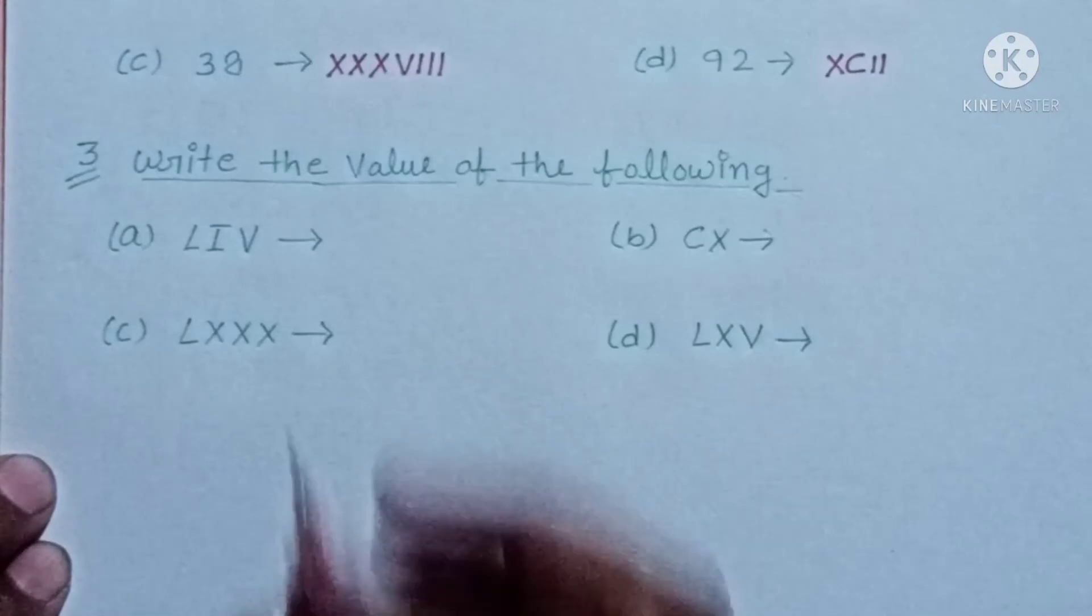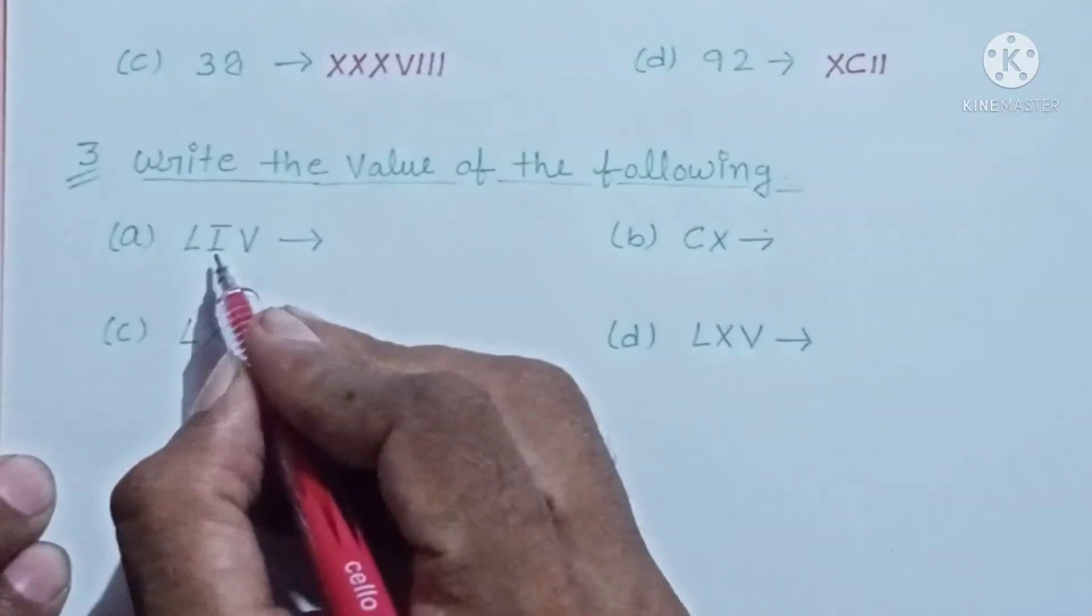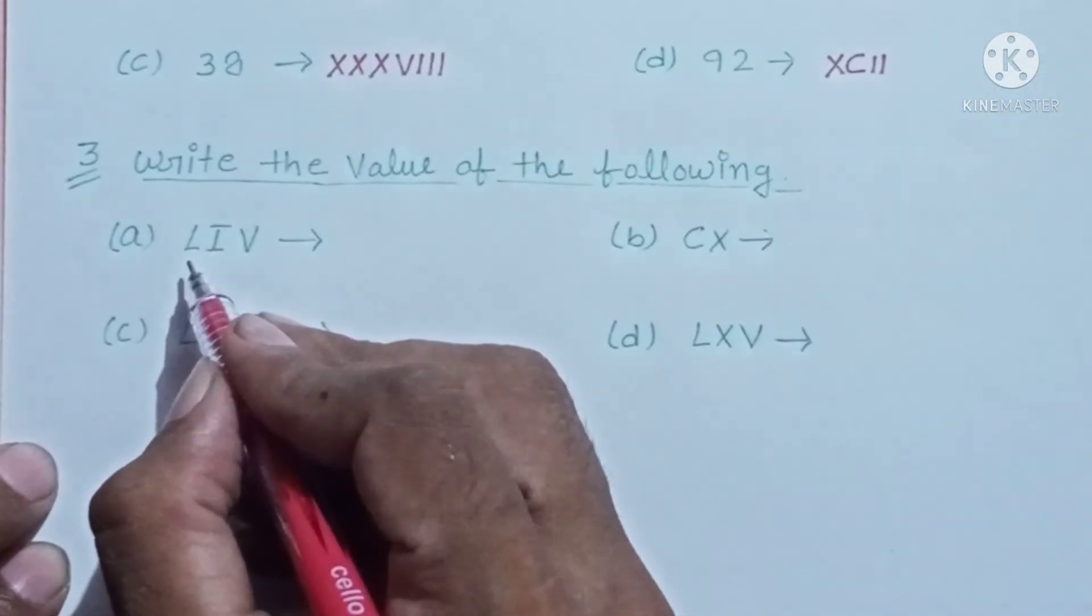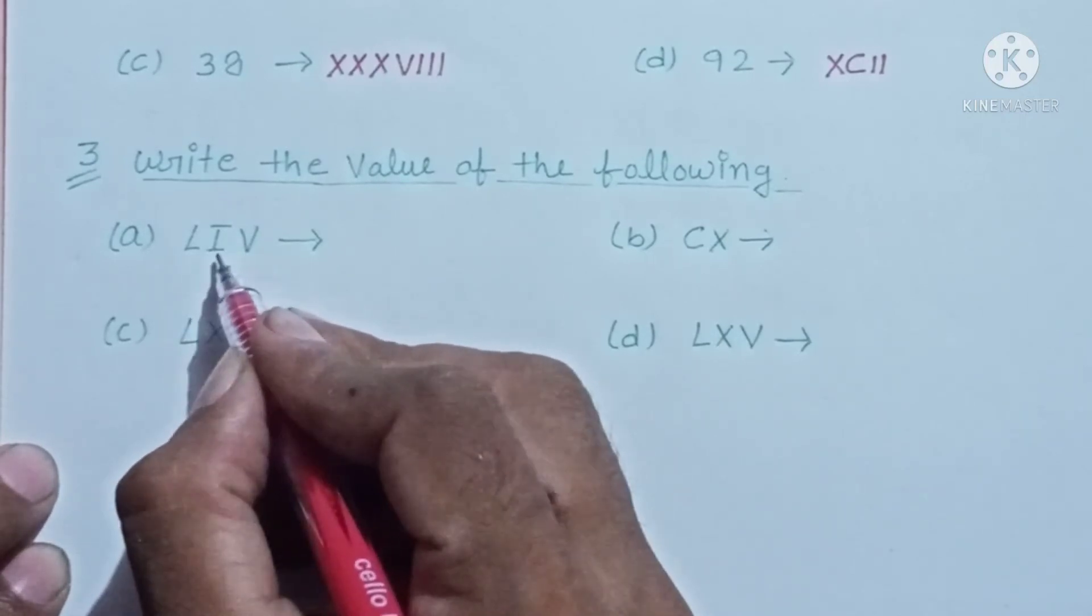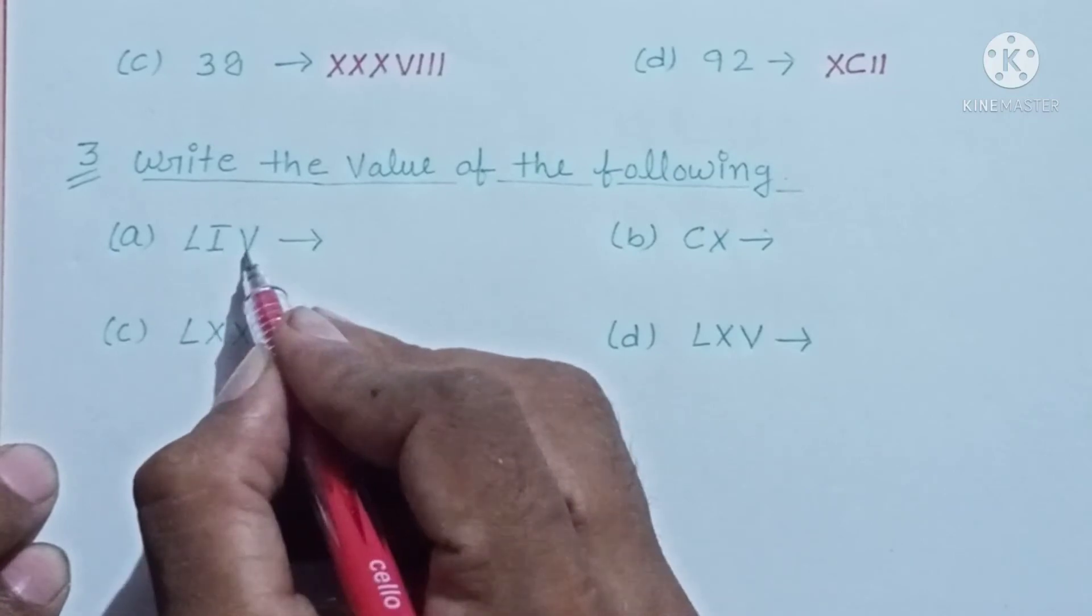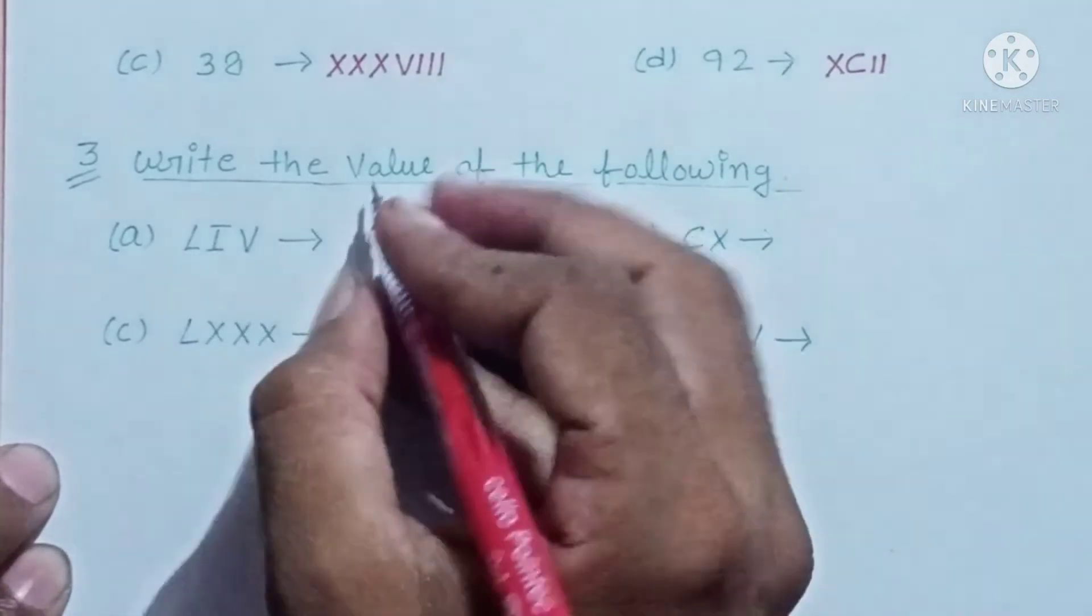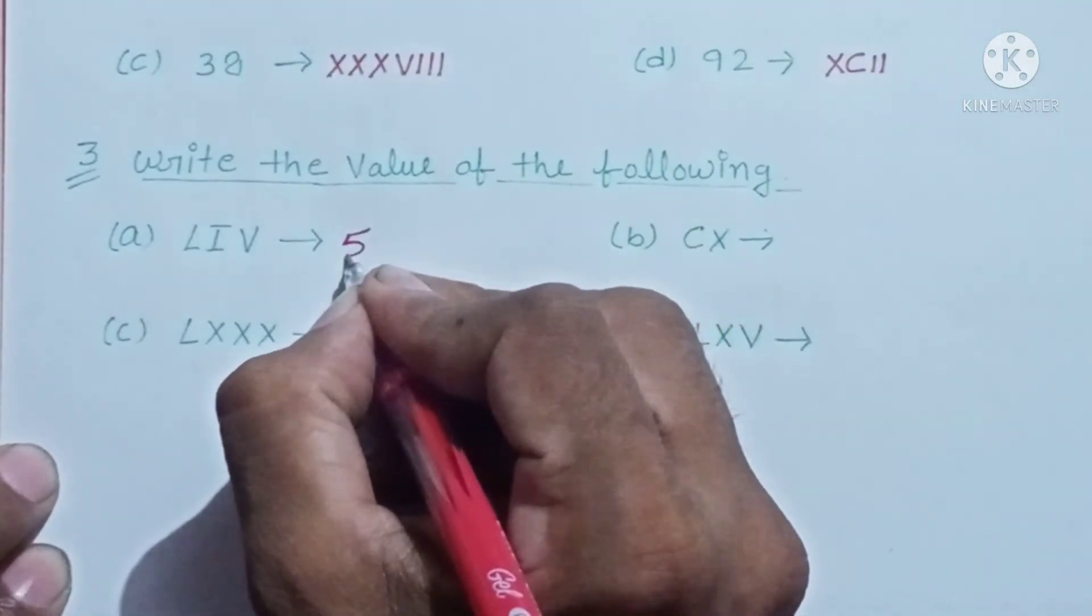First is third A: LIV. Its value is L for 50 and IV, which is 4. So 54 is the value.